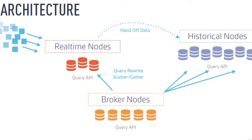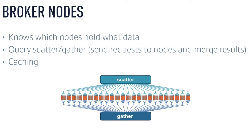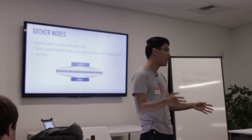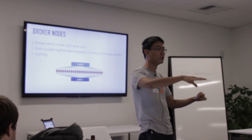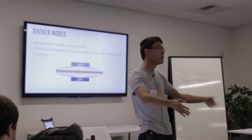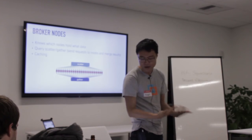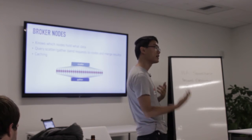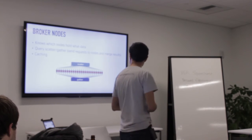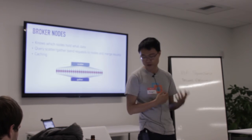In front of real-time and historical nodes, we have broker nodes. Broker nodes encapsulate the functionality of knowing what data lives on what pieces of the cluster. Queries go through broker nodes, which figure out what real-time or historical nodes hold the relevant data. Broker nodes forward the query down to the appropriate nodes, which do their computation in parallel, then return results to the broker, which does the final level of merging and returns results to the caller. Broker nodes encapsulate this query scatter-gather functionality and also support caching.